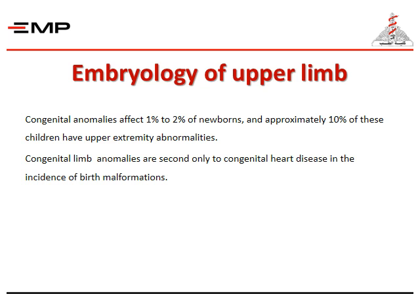Regarding the embryology of the upper limb: congenital anomalies affect one to two percent of newborns, and approximately ten percent of these children have got upper extremity abnormalities. Congenital limb anomalies are second only to congenital heart disease in the incidence of birth malformations.